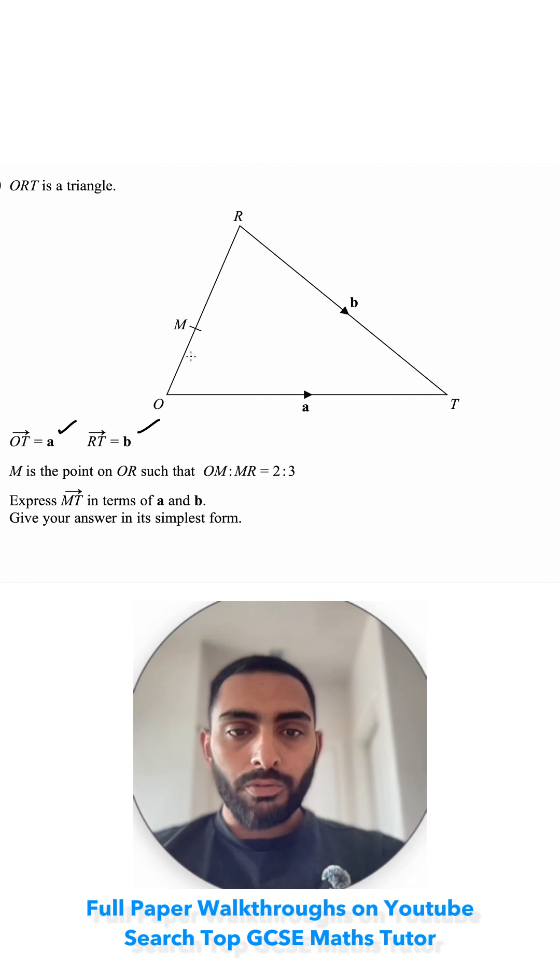M is the point on OR such that OM:MR is 2:3. This line is split up in a ratio 2 to 3, so altogether there are 5 parts. That means this part of the line will be 2 fifths and this part would be 3 fifths.